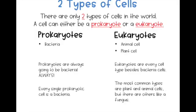Now, on to the types of cells. There are two different types of cells — all cells in the entire world can either be a prokaryote or a eukaryote. Looking at the left-hand column: prokaryotes are always going to be bacteria. Every single prokaryotic cell is a bacterium. On the right-hand side we have eukaryotes, and there's a little more diversity there. Eukaryotes can be animal cells or plant cells — basically every cell type except bacteria. The most common are plants and animals, but there are others like fungi.